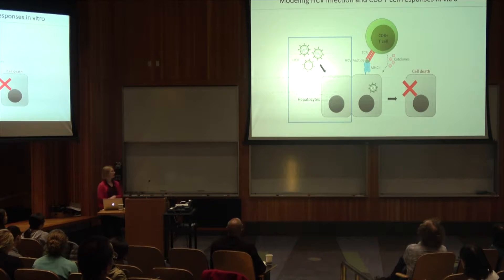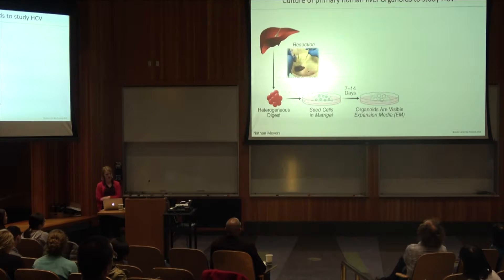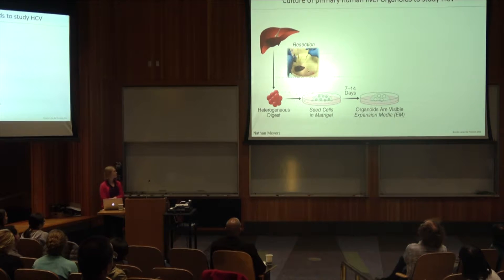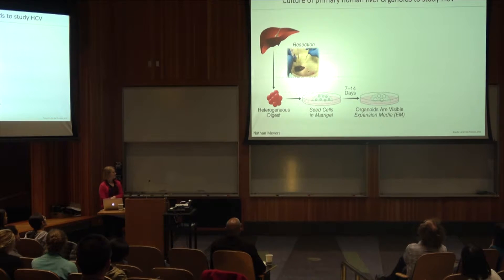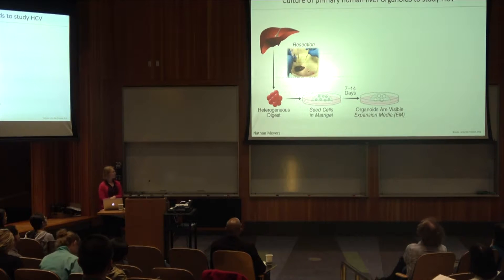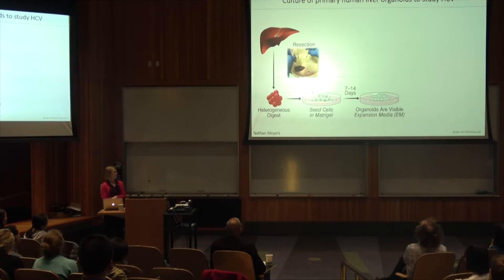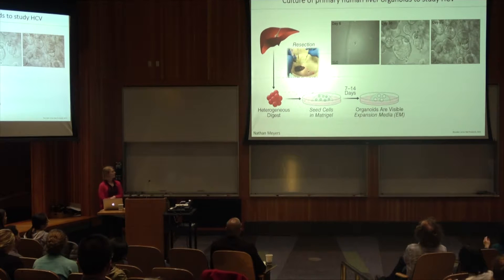I'm going to introduce how we model HCV infection in our lab. We do this through primary human liver organoids, based on a previously published model from Hans Kleber's lab, where we get liver resections from both HCV-positive donors as well as non-viral donors. We digest them down into single cells, seed them in Matrigel, and culture them in the media published to grow out the Epcam-positive stem cells. Over about 7 to 14 days, you can begin to see visible organoids in this culture. After 6 days you begin to see them; they're quite small.